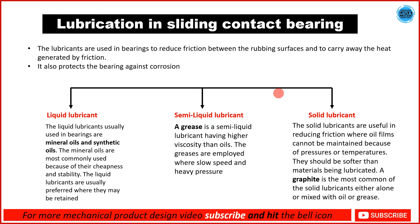There are three types of lubricants used for sliding contact bearings: liquid lubricant, semi-liquid lubricant, and solid lubricant. In liquid lubricants, we generally use mineral oils and synthetic oils. Mineral oils are most common because of their cheapness and stability. Semi-liquid lubricants use grease, which has a higher viscosity than oil. Grease is employed where slow speed and heavy pressure exist on the bearing.